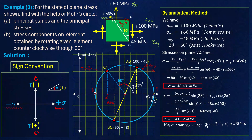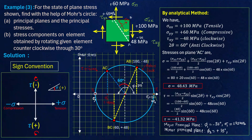For the minor principal plane, the angle from plane AB is approximately 110 degrees anti-clockwise on the Mohr circle, giving an actual angle of phi_2 ≈ +55 degrees. The minor principal stress sigma_2 is approximately 28 MPa from the graph. If you draw a proper graph you will get very accurate values. I hope this method has been understood properly — thank you very much.